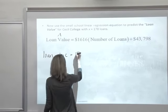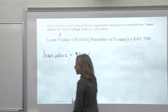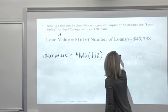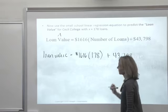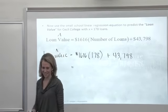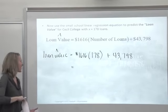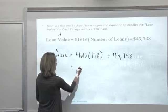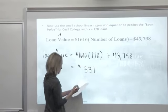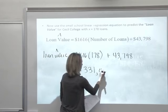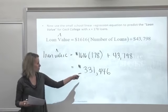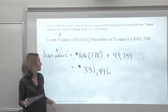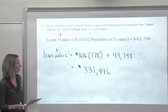Put it in your calculator. This time, this regression equation predicts a loan value of $331,446. Much closer to the like $295,000 that was the actual value from the data set. So much better here.